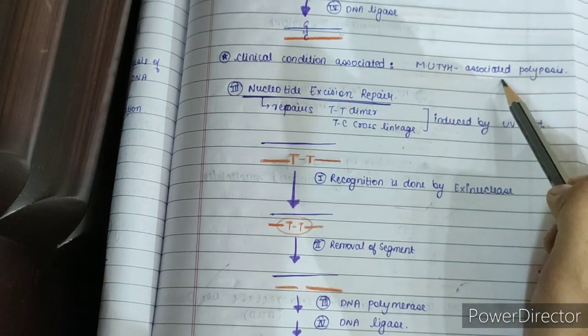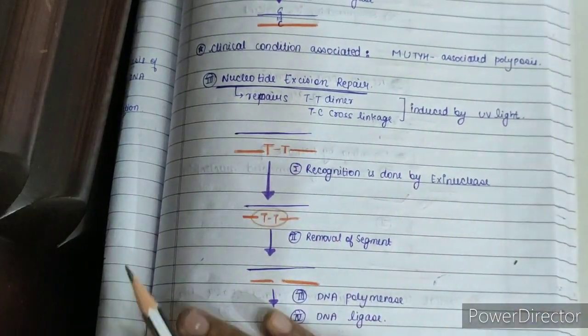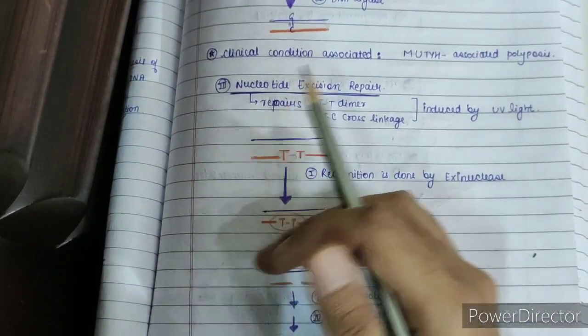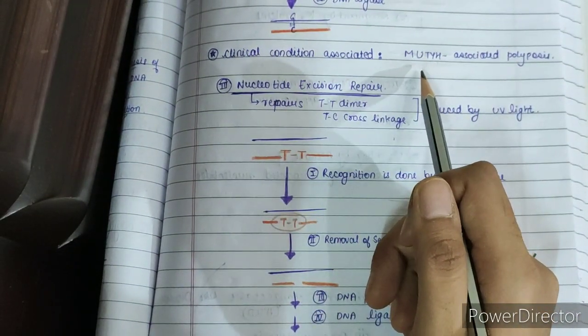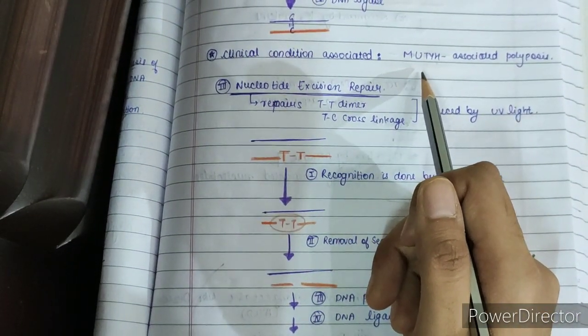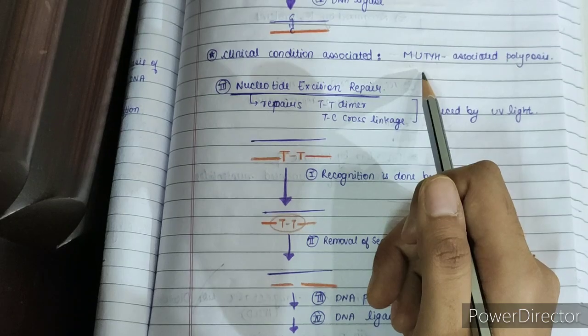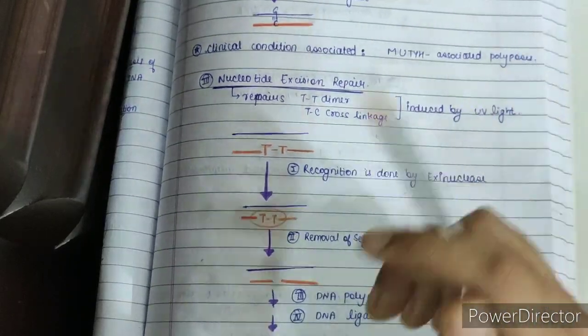The clinical condition associated with base excision repair dysfunction is MUTYH-associated polyposis. This is not as high-yield but is worth noting.